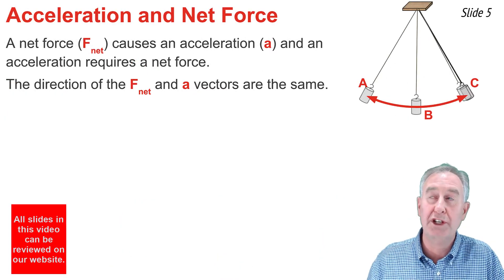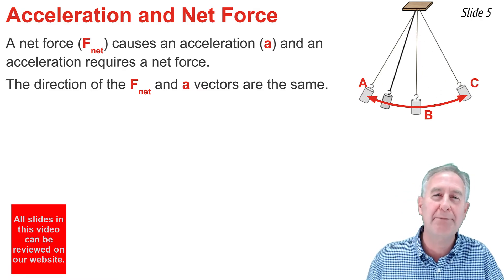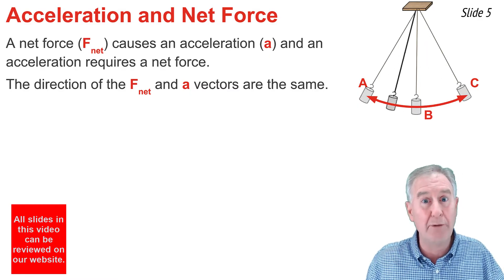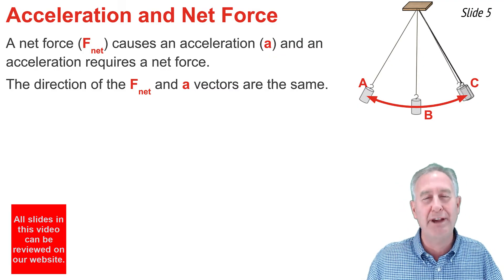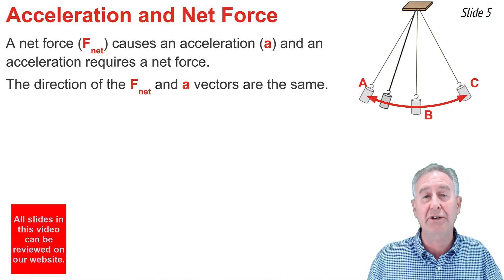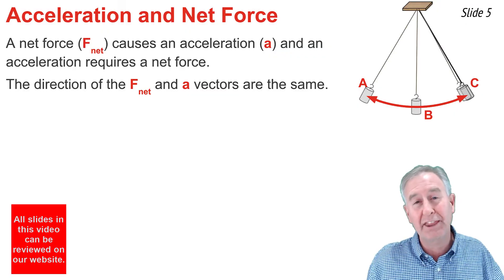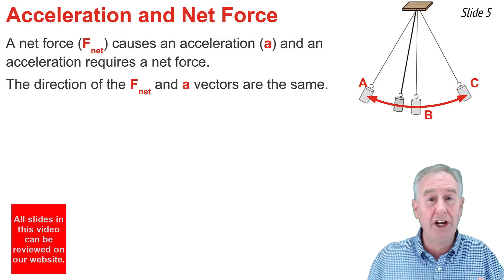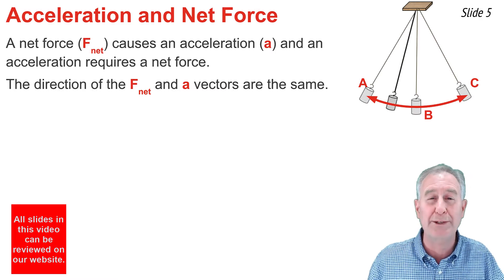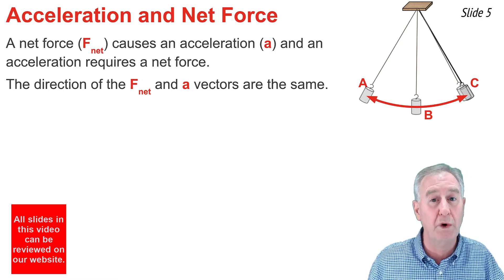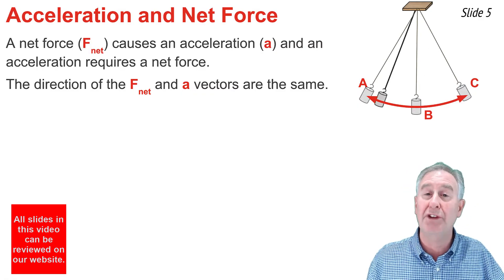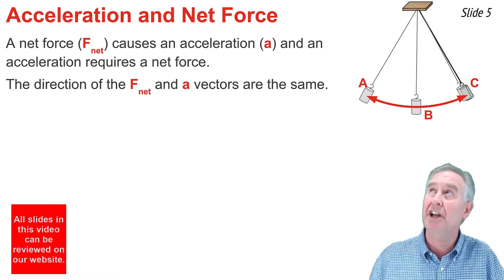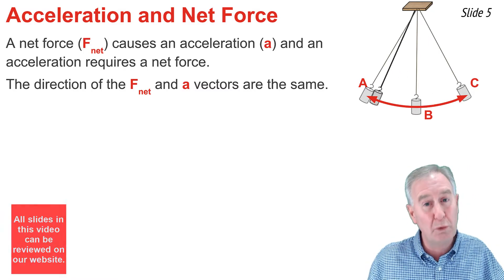Let's talk about the acceleration and net force experienced by the pendulum bob as it moves back and forth from A to B to C and then back from C to B to A for a complete cycle. When we think about acceleration and net force, we have to think about Newton's laws. A net force causes an acceleration and an acceleration requires a net force, and the direction of the net force and acceleration vectors are always in the same direction. Since the pendulum bob is moving along a circular arc, circular motion principles tell us that movement along a circular path requires an inward, centripetal force — that is, a force towards the center of the circle, which is the pivot point. So as the bob moves along its circular path, there's a component of net force directed towards the pivot point.